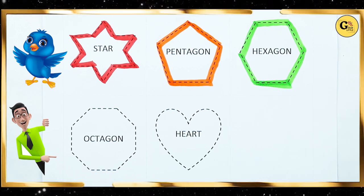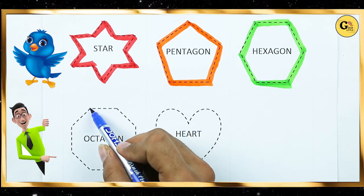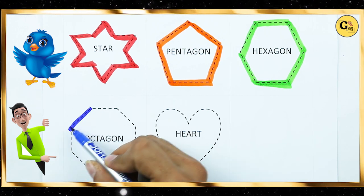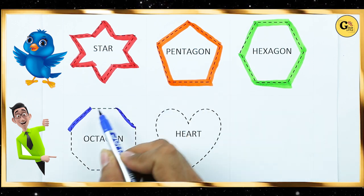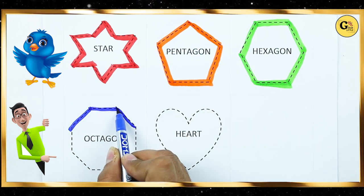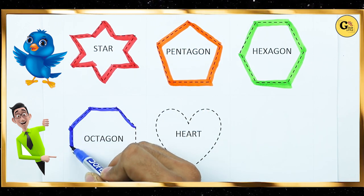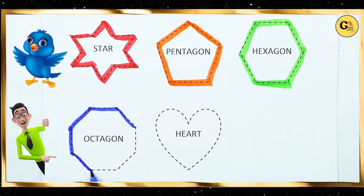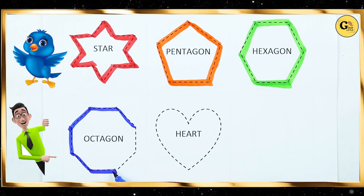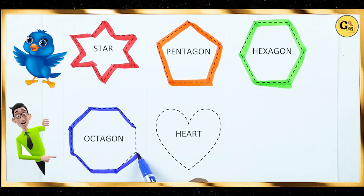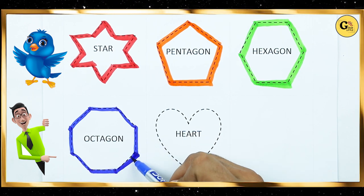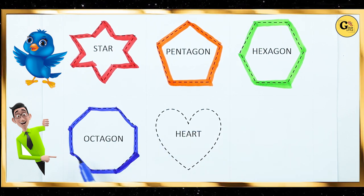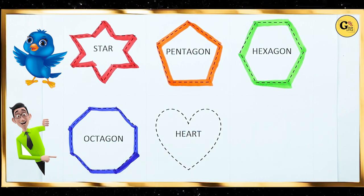Octagon. One line, two line, three line, four, five, six, seven, eight. Eight lines means octagon.